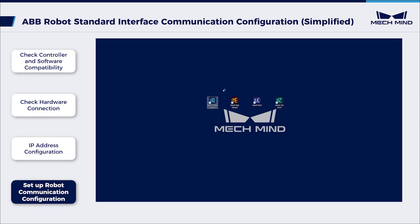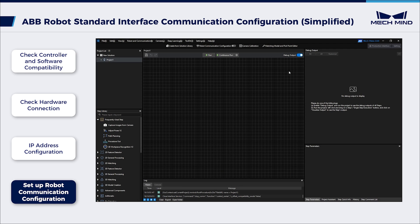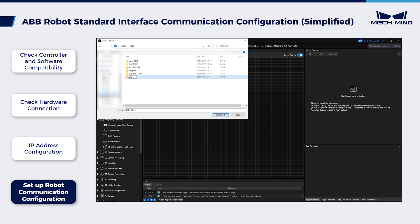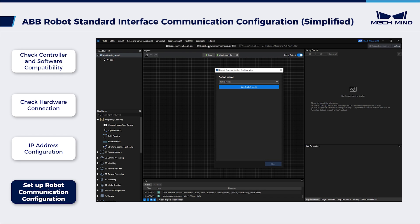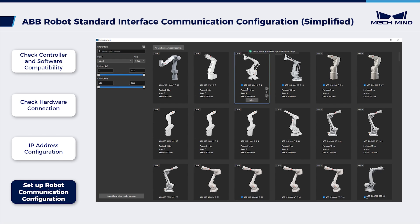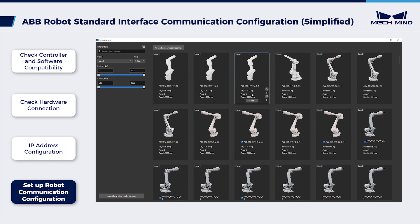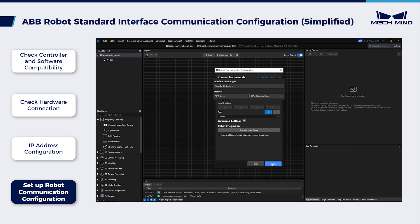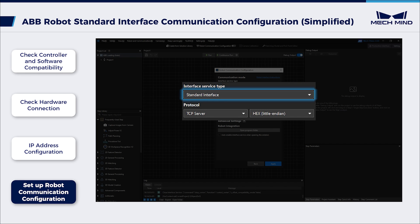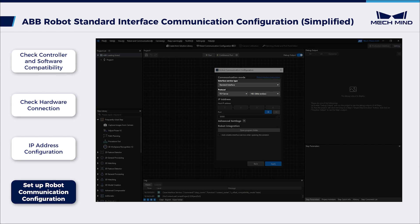Open MechVision and choose and create a solution based on your application scenario. Click Robot Communication Configuration on the toolbar. Select the Listed Robot from the Select Robot drop-down menu, click Select Robot Model, and select the ABB Robot Model in use. Click Next. Make sure the interface type is Standard Interface and the protocol is TCP Server and HEX Little Endian. Click Apply.